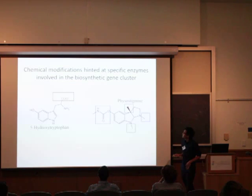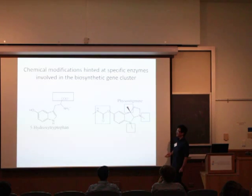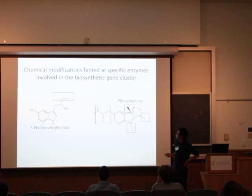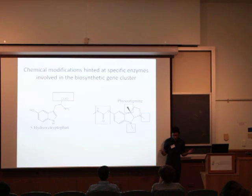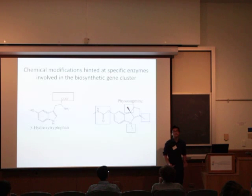We're going to play a spot-the-difference exercise. Looking at physostigmine, the final product, you can see there is an indole group, so you can hypothesize the precursor is 5-hydroxytryptophan — tryptophan with a hydroxy group. Comparing the two structures, there is no carboxylic acid group, so it got decarboxylated. You can also see a carbamate group and some methylations. So when searching the genome for a gene cluster, you would expect to find decarboxylases, methyltransferases, and carbamoyltransferases.